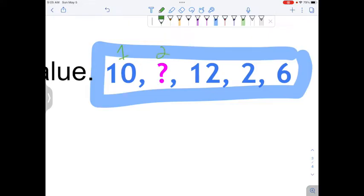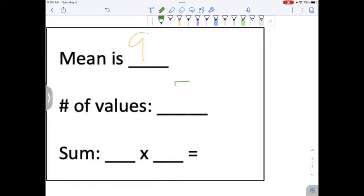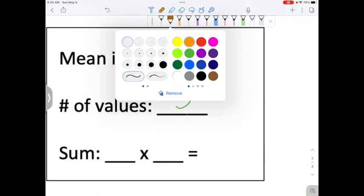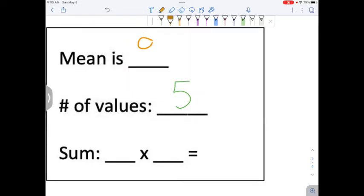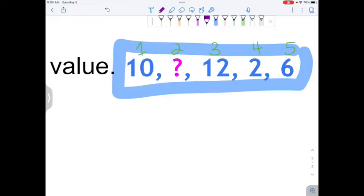There are 5 numbers. So I'm going to put that in this box. So if we want to know the sum of all of those numbers in the list, we're going to say 5, the number of values, times 9. And that gives us a total of 45. So what that means is if we add up all the numbers in the list, including the missing number, they should all add up to 45.